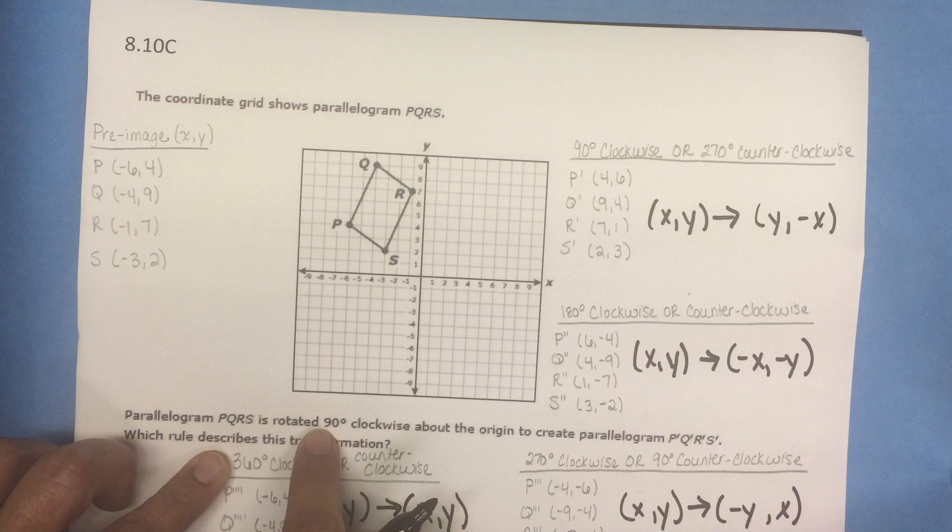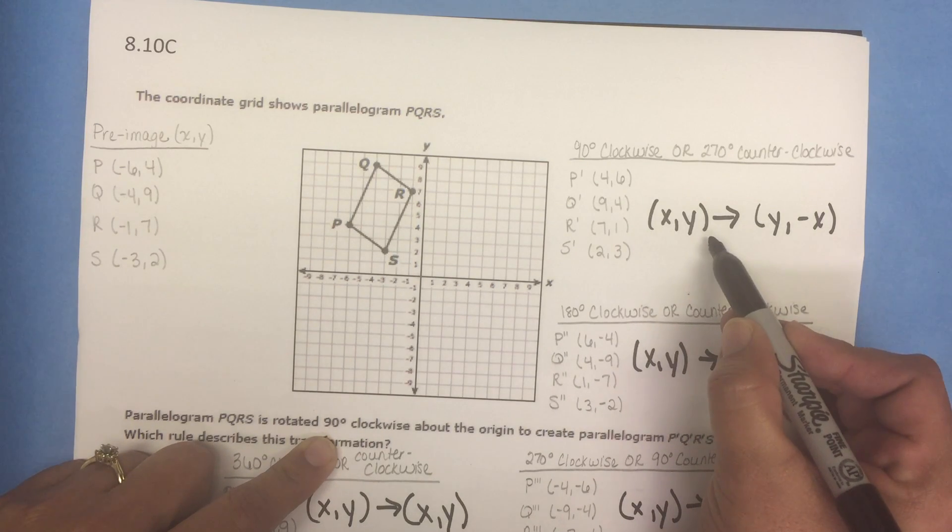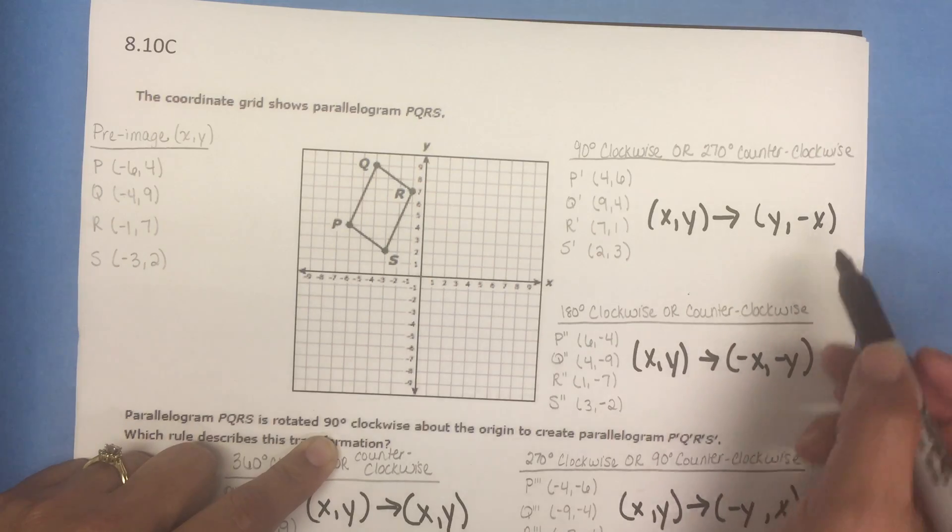So going back to this question, which algebraic representation would be used to describe a 90 degree clockwise rotation? That would be (x,y) which will be transformed to (y, -x).